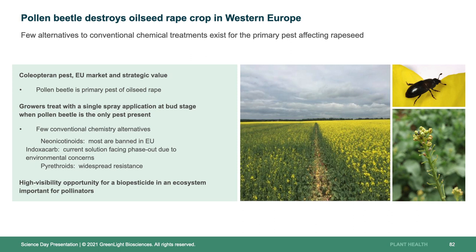The next project is pollen beetle, a pest of oil seed rape only in Europe. There are few alternatives to control pollen beetle at this time. All alternatives are chemical, but many are being phased out due to concerns with non-target organisms such as pollinators. There are also pyrethroids, but there is widespread resistance. The current solution is indoxacarb, and it's under heavy pressure from the EU government due to environmental concerns. The panel on the right shows an oil seed rape field — the crop on the left has not been treated with an insecticide, while the crop on the right has been treated, and more yellow in the field is better because each yellow bud turns into a harvestable seed crop.